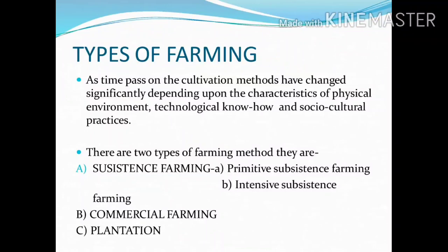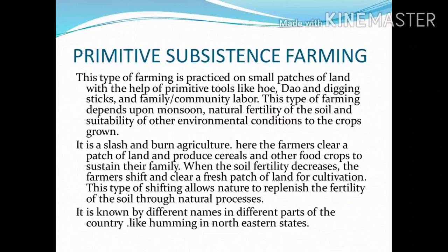Let us start with primitive subsistence farming. This type of farming is practiced on small patches of land with the help of primitive tools like hoe, dao, and digging sticks, and family or community labor. This type of farming depends upon monsoon, natural fertility of the soil, and suitability of other environmental conditions to the crops grown. It is a slash and burn agriculture.